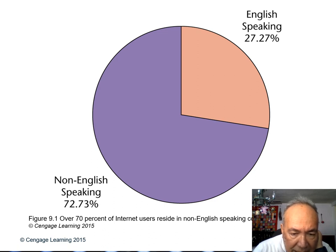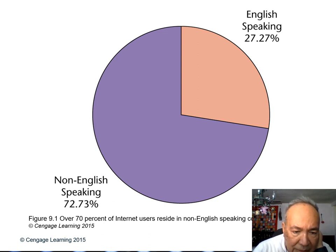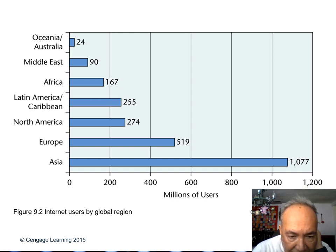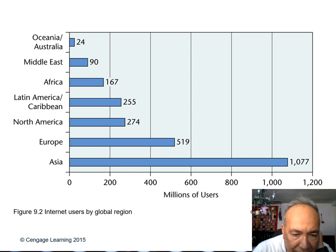This shows the non-English speaking versus English speaking countries. Only about one-third of the world speaks English. Looking at internet users by global region, Asia has a lot. Then Europe. And then North America — this represents the United States.